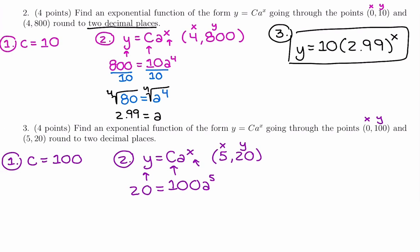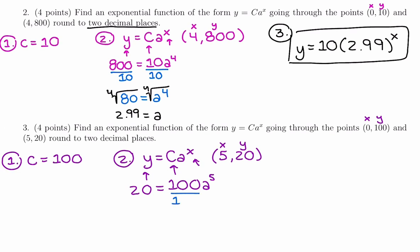Let's see what we get. First, we're going to divide both sides by 100. So we have 20 divided by 100, which we can actually just make a nice decimal of 0.2. And that is a to the fifth.